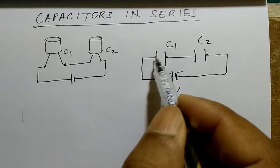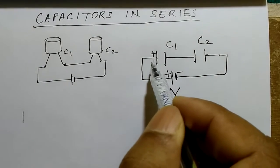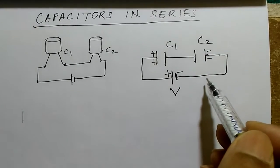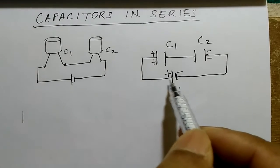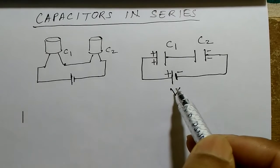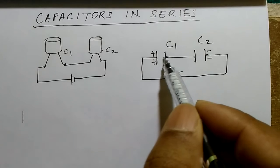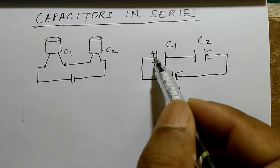Due to such connection, this plate will become positively charged, this plate of C2 will become negatively charged, equal to the potential difference of the battery terminals. This plate is not charged, this plate is not charged, but these positive and negative charges exist here, so that results in an electric field in the connecting wires.